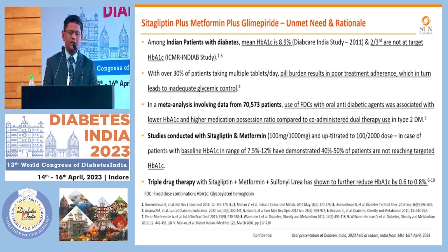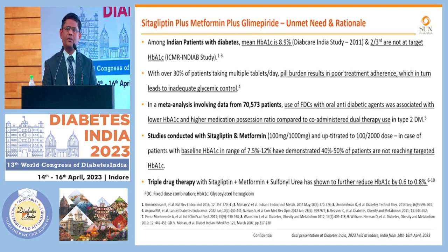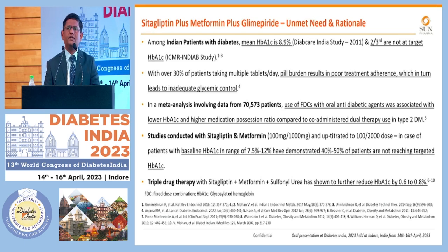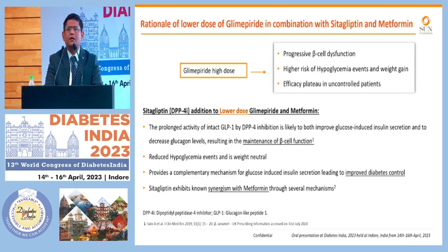When we look at the meta-analysis data, patients using combination therapy are achieving the target HbA1C level better than those using drugs in a co-administered fashion. When we talk about common drugs used for initial therapy of diabetes like Sitagliptin and Metformin, we have seen that patients still require add-on therapy. Patients initially on Metformin and Glimepiride later need another drug added, and that is where there is a need for a drug that provides add-on therapy and improves adherence — leading us to the FDC of Sitagliptin, Metformin, and Glimepiride.